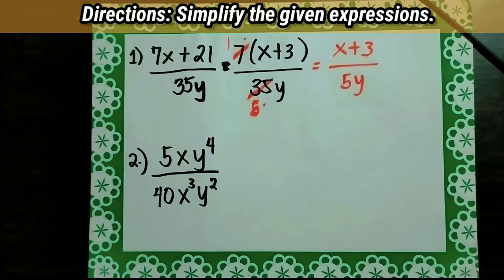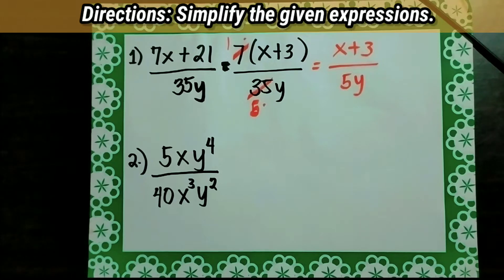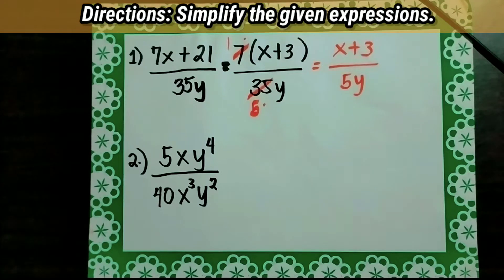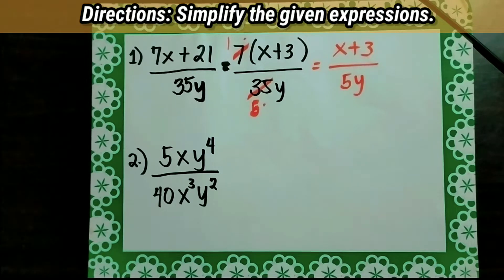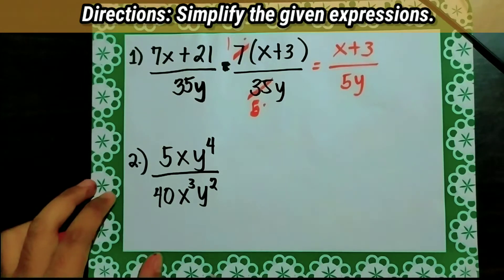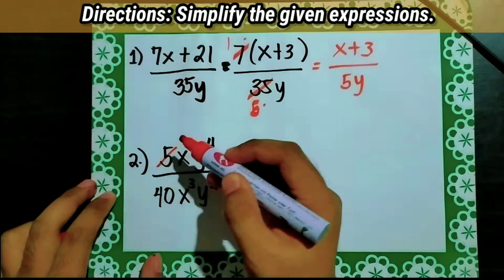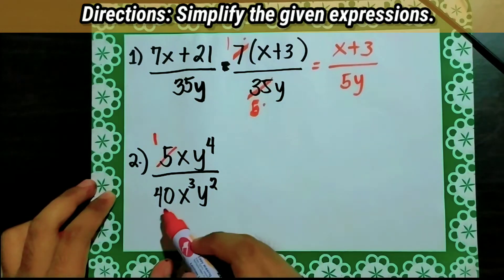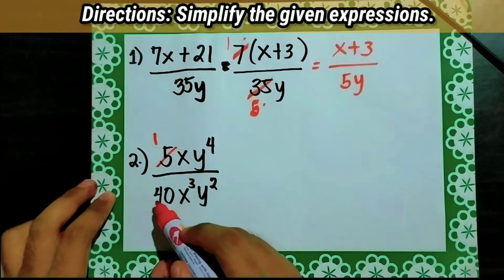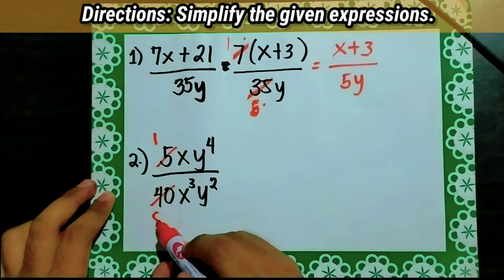Let's answer number 2: 5xy raised to 4 over 40x cubed y squared. To simplify this, we will use the quotient of powers and divide out 5 and 40 using their common factor. In 5 and 40, the greatest common factor is 5. So 5 divided by 5 becomes 1, and 40 divided by 5 becomes 8.